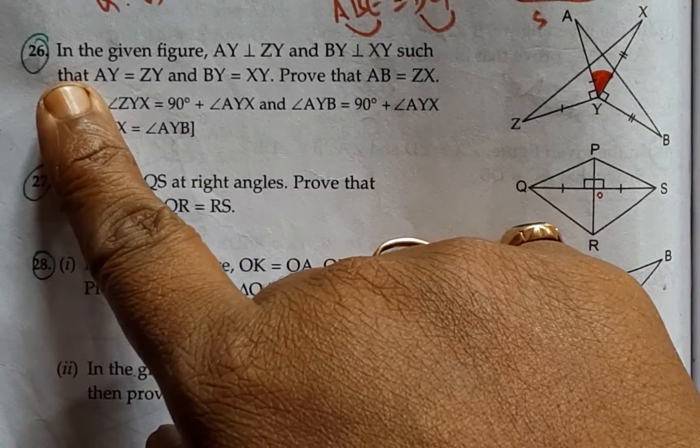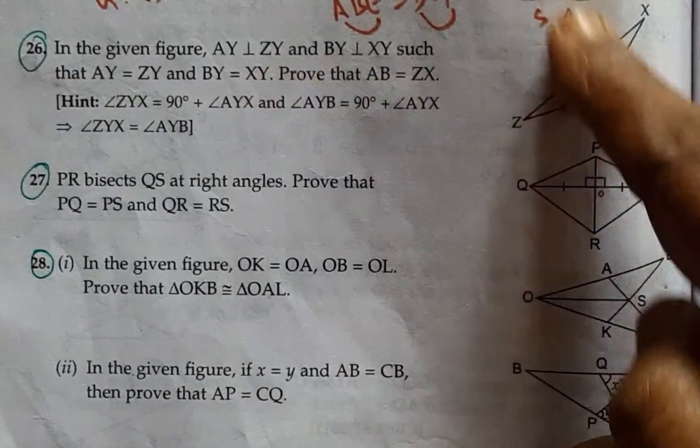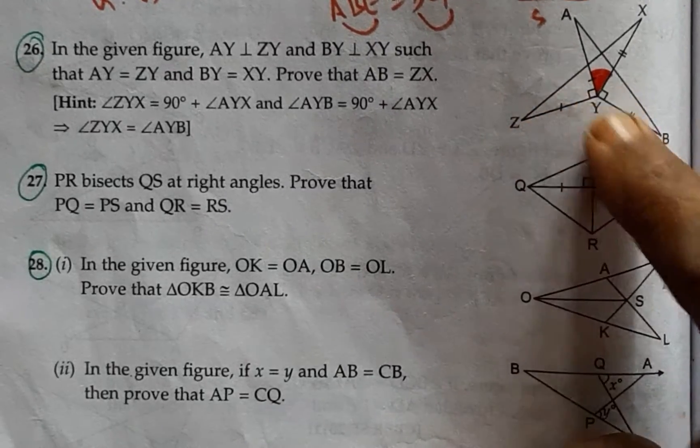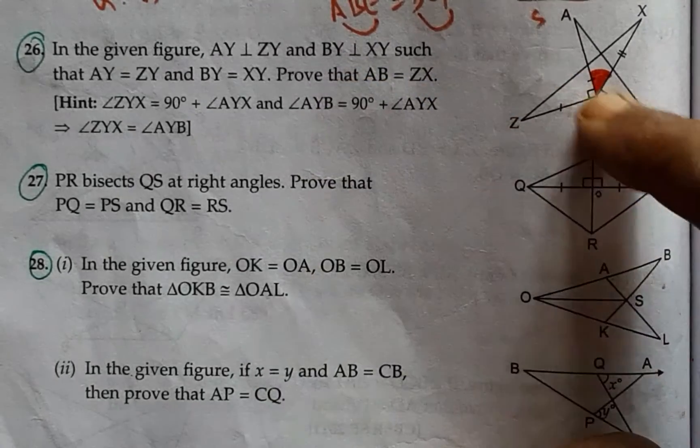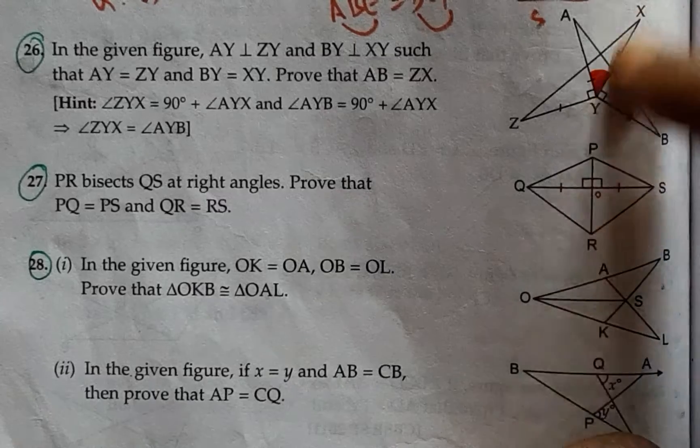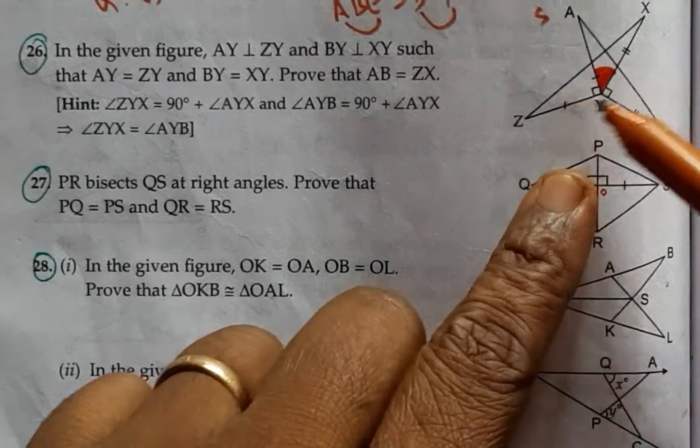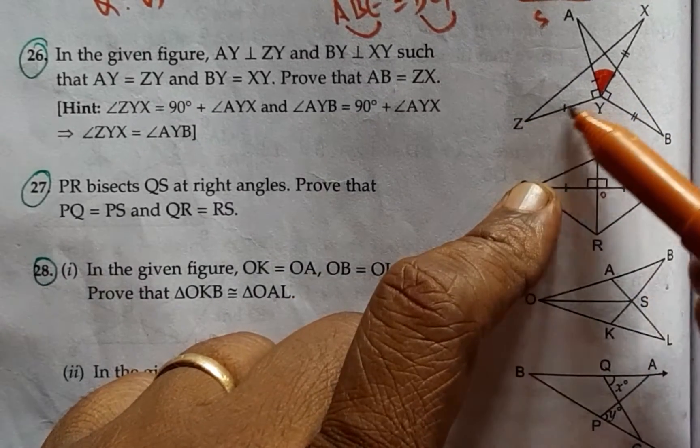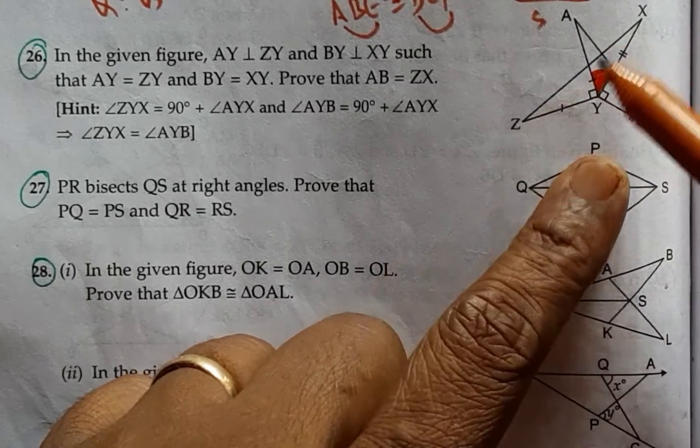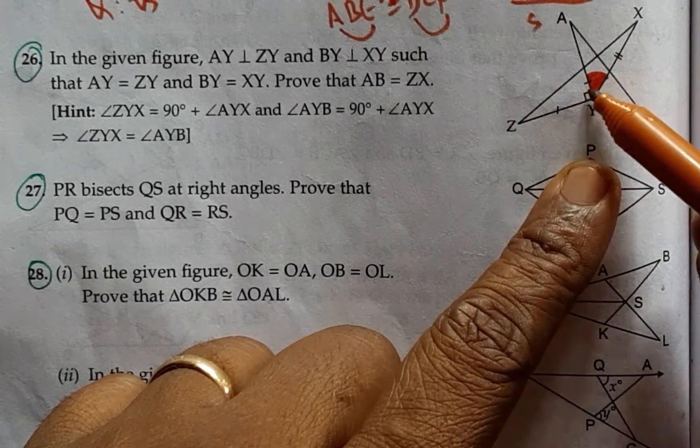Now let us come to the 26th question. AY is perpendicular to ZY and BY is perpendicular to XY. Therefore this angle is 90 degrees and now if I consider this triangle, if I add this angle to this angle...